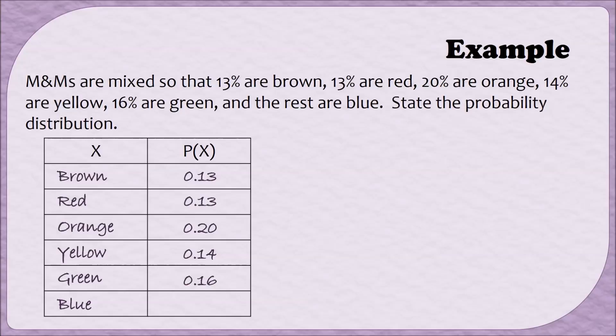When we get to the end of our list, however, we're stuck with blue, because we weren't told the percentage of M&Ms that were blue. However, we can find it. Since these are the only colors of M&Ms, we know that these percentages have to add up to be 100%. So the first thing I'm going to do is add up all of the percentages we know. So I'll add up 0.13 plus 0.13 plus 0.20 plus 0.14 plus 0.16, and that will give me 0.76, or 76%. To find the ratio of M&Ms that are blue, all I have to do then is to subtract that 0.76 from 1. This is like subtracting 76% from 100%. And I end up with 0.24, or 24%. So the probability that an M&M is blue is 0.24.